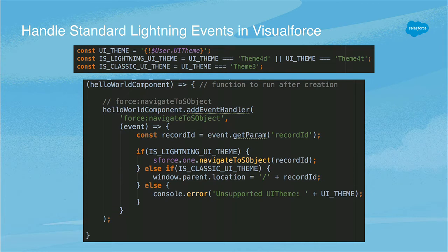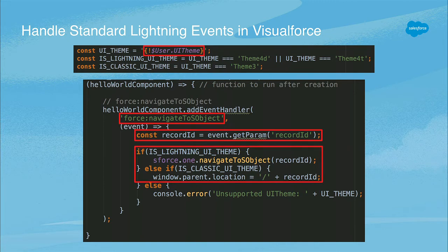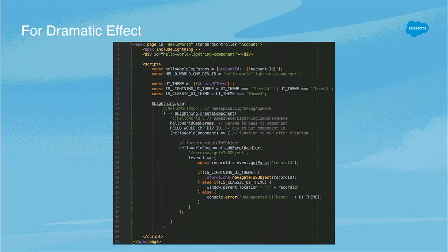I Googled some more, and in the docs I found: 'Because standard Lightning events are supported in Lightning Experience and Salesforce app only' — which means they are not supported in Classic. You need to roll your own event handlers, which you'll also find if you Google. So I did that. I have some variables up at the top where you give it the UI theme, and within your JavaScript, remember that empty callback? We're adding to that now — you tell it the name of the event, in the event you're getting out the record ID, and then if you're in Lightning you do one thing, if you're in Classic you do another. It worked, but now I've got a 41-line file for what is really just two lines. And imagine if you're handling more and more events — you really just start to balloon things.